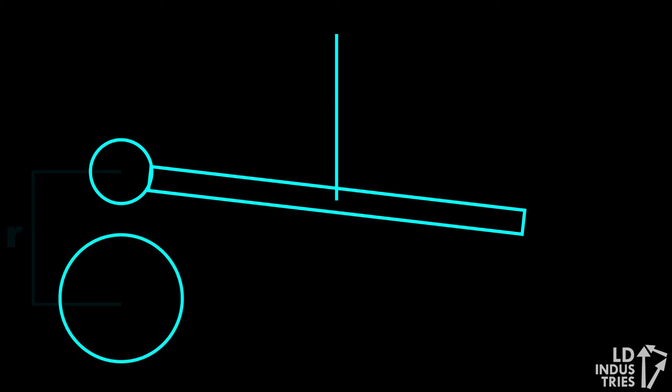The basic design of each torsion balance is the same. A bar is suspended from a fine wire or string. On the bar is a sphere which is placed near to another fixed sphere, a distance R away.